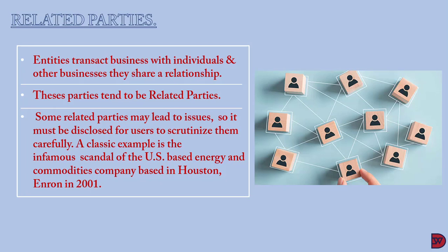A classic example of the downside of a related party is the infamous scandal of the US-based energy and commodities company Enron, based in Houston, which occurred in 2001. Enron used related party transactions with special purpose entities to help conceal billions of dollars in debts from failed business ventures and investments. The related parties misled the board of directors, their audit committee, employees, and the public. This fraudulent related party transactions led to Enron's bankruptcy, prison sentences for its executives, and lost pensions and savings of employees and shareholders.